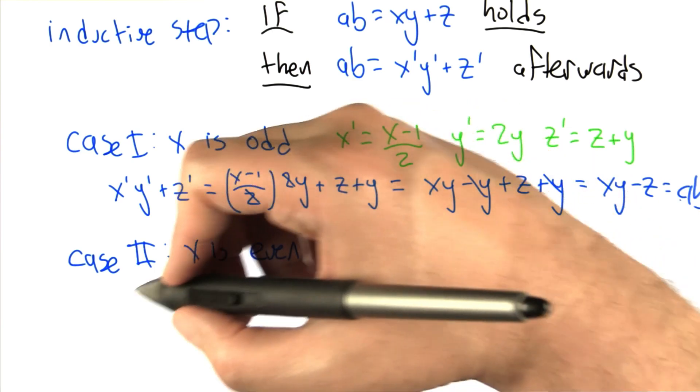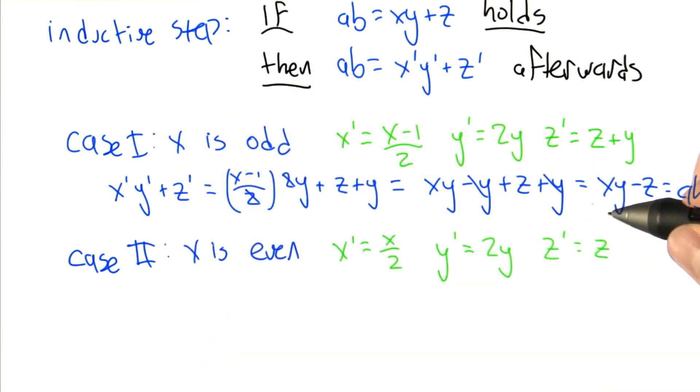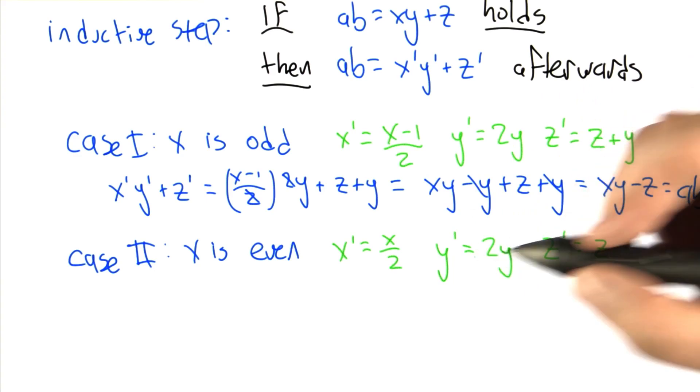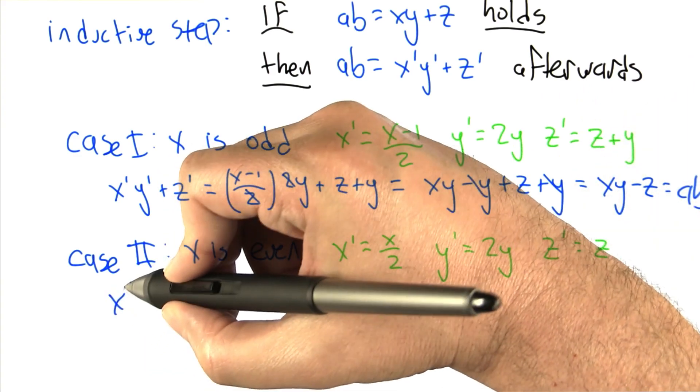What about the case where x is even? In some ways this case is easier because the bit shift on x just halves it. z doesn't change at all and y again is doubled.